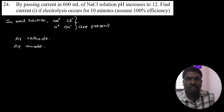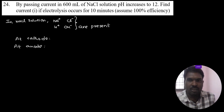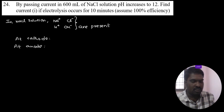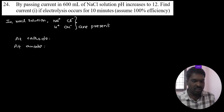Good morning dear students. I want to discuss a JEE Main 2025 Phase 1 question from electrochemistry. By passing current in 600 ml of NaCl solution, pH increases to 12. Find the current if electrolysis occurs for 10 minutes.